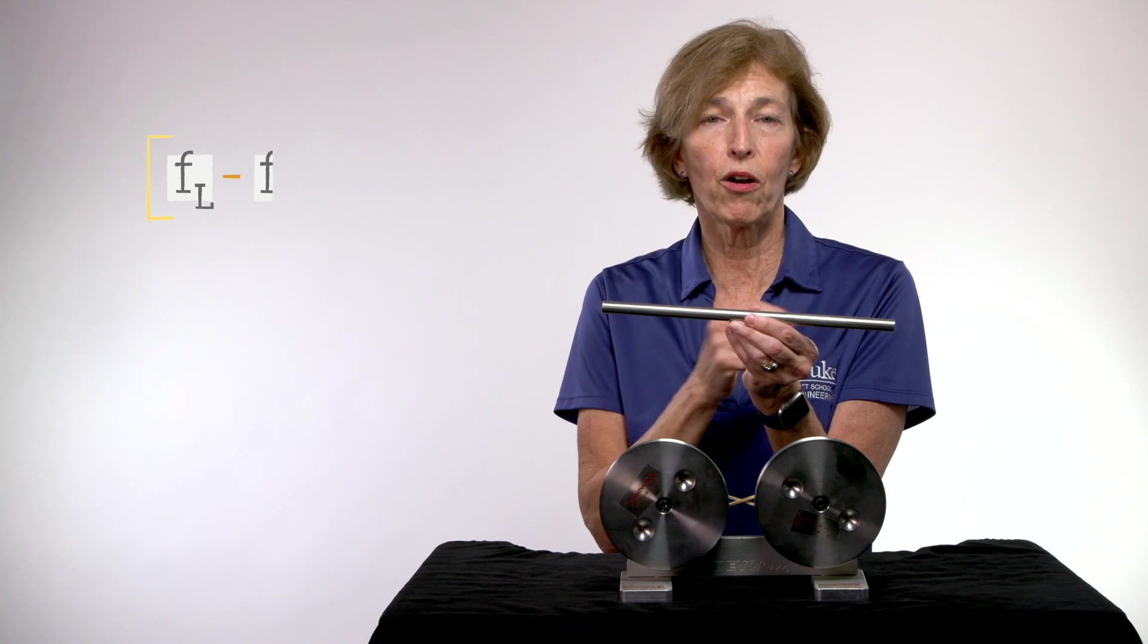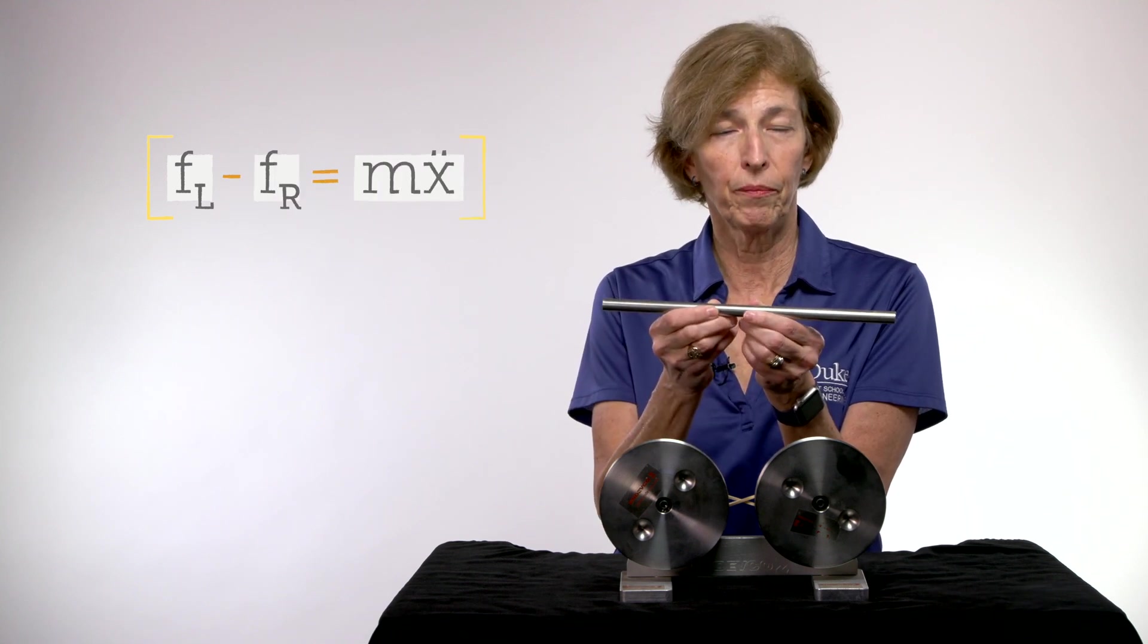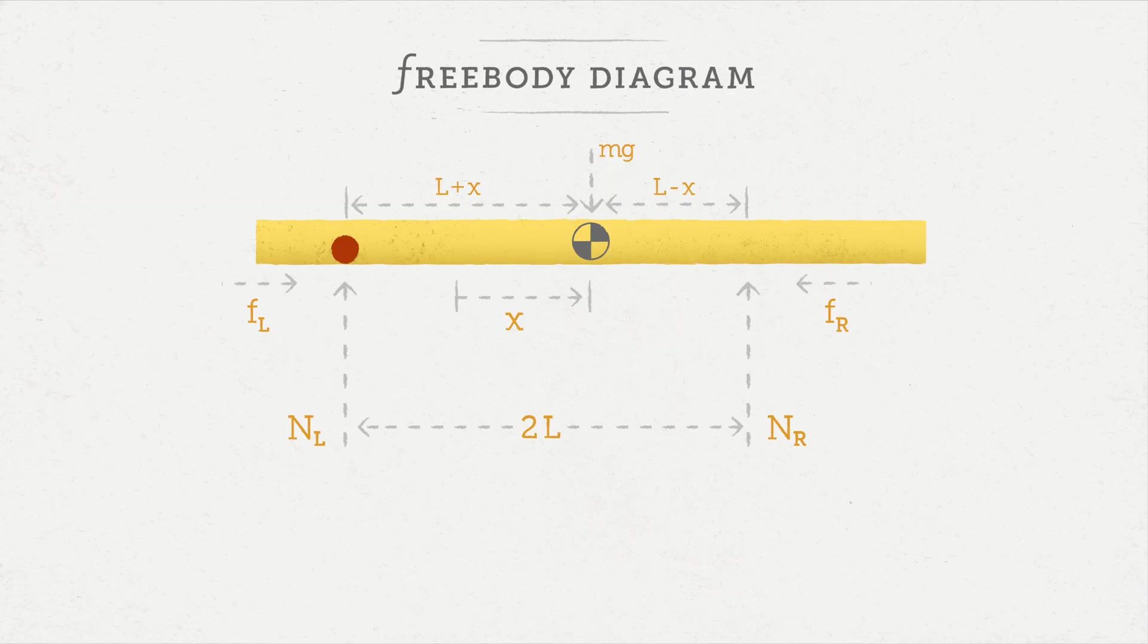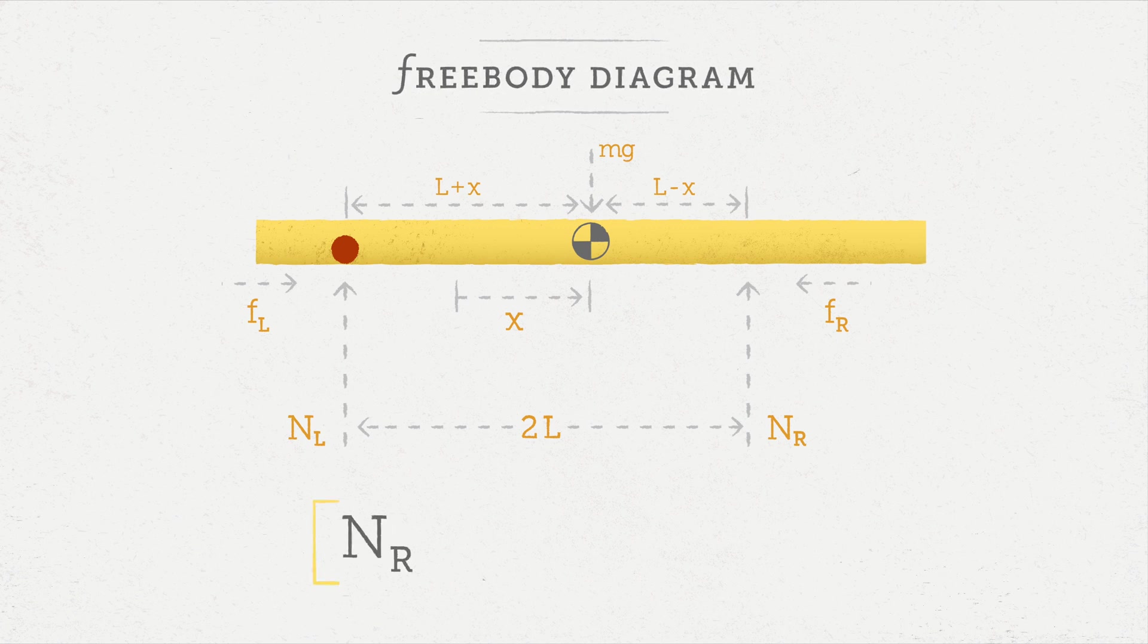So F L minus F R equals M X double dot. That's our first equation. Now the other thing that you'll notice is that the bar did not rotate. It stayed horizontal. So that means that all of the moments that acted on this bar were balanced out. So if I try to hold the bar here at this point where the left wheel attaches, and I say the moments have to be equal.